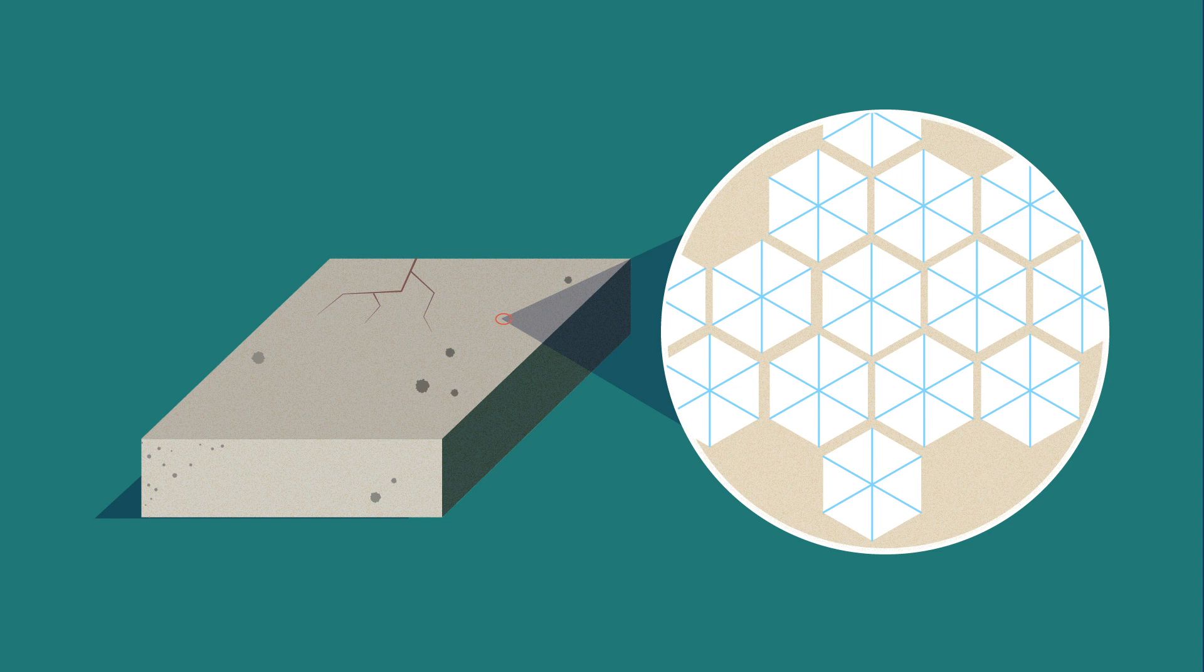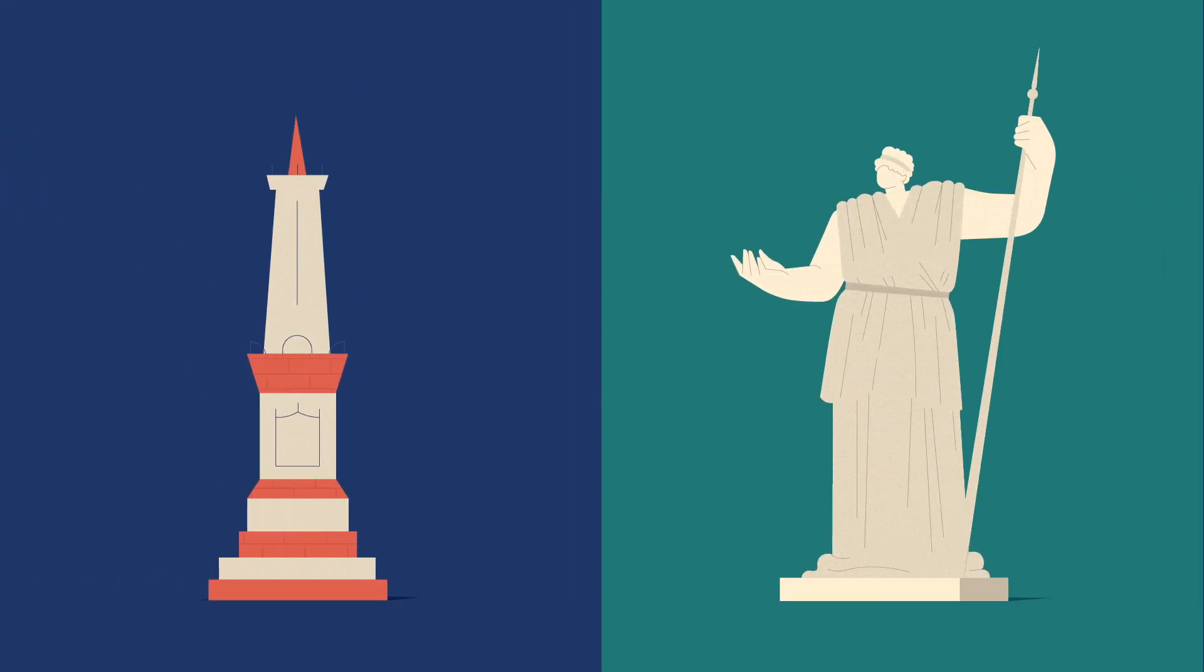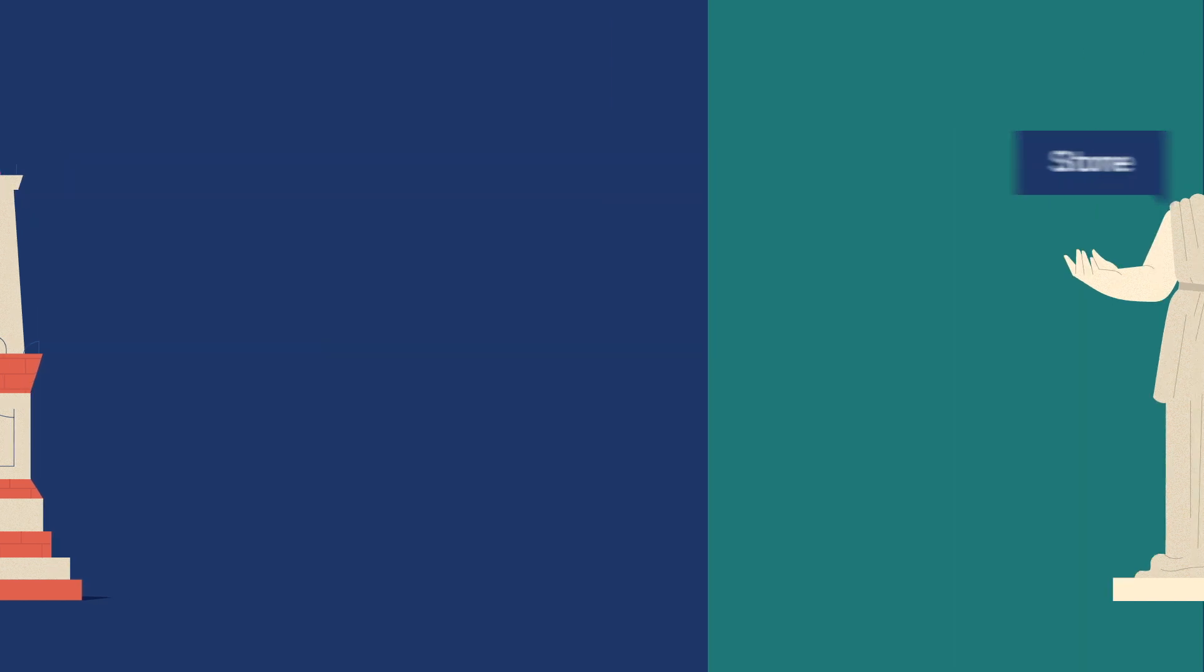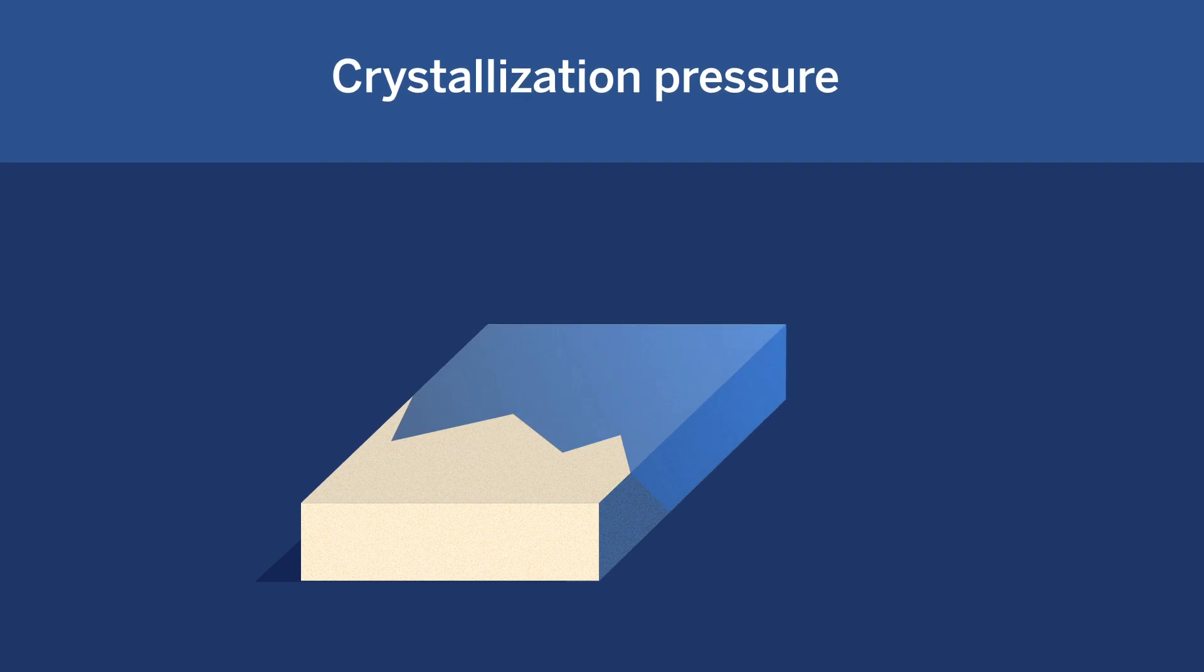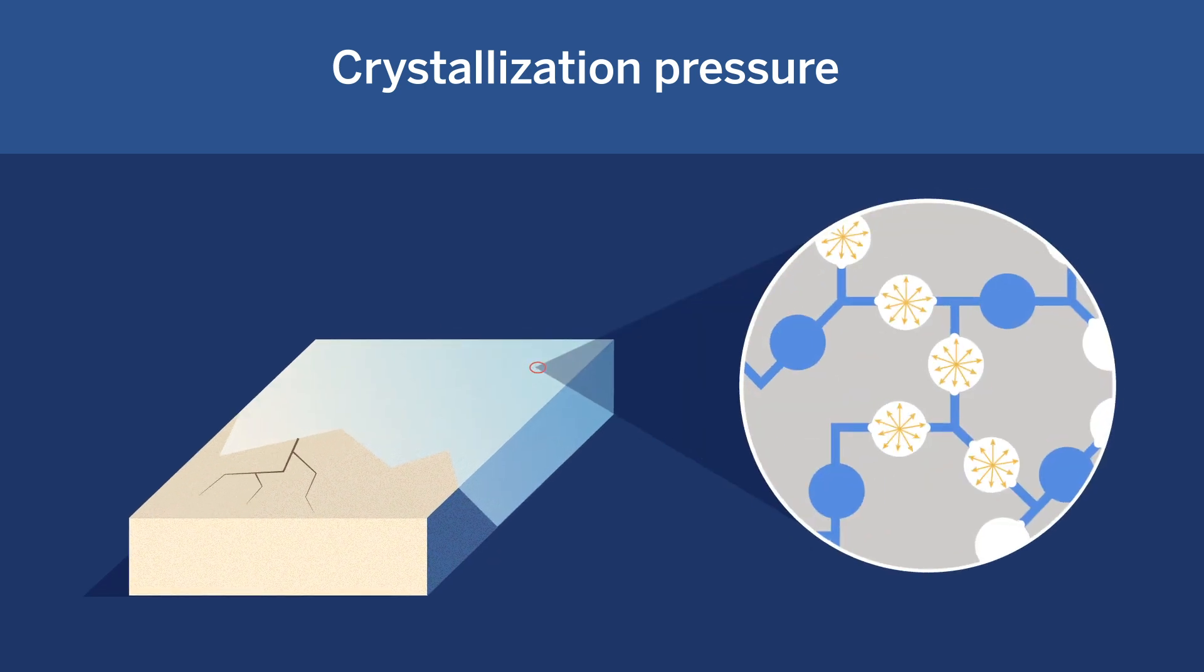Salt damage is one of the most important weathering mechanisms for monuments and sculptures made of stone or brick, but it also affects cementitious materials in a variety of ways. The underlying mechanism of salt damage is crystallization pressure, which we already introduced as one of the mechanisms through which the freezing of water can damage porous materials.